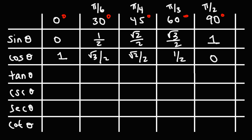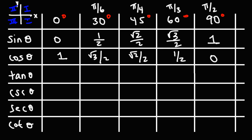These are the common reference angles that you want to be familiar with. These values will be the same in quadrants 2, 3, and 4 — the only difference is the sign may change. Sine, which is associated with the y values, is positive in quadrants 1 and 2, because y is above the x-axis.